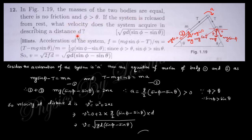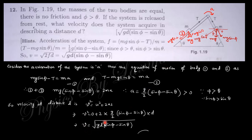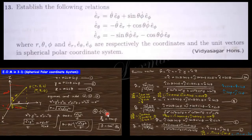To find the velocity at distance d, we use v² = u² + 2as. The initial velocity u is zero, a is the acceleration g(sinφ−sinθ)/2, and s is the distance d. With this equation you can easily find out the velocity of the system after describing the path d.